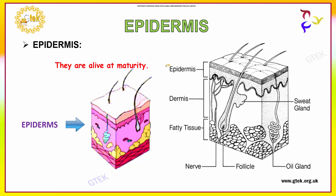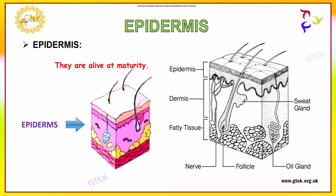Now we are going to discuss about epidermis. Epidermis — they are alive at maturity. The upper portion is called epidermis, and this portion is called dermis. The below portion is called fatty tissue, and this is called nerve. This portion is called follicle, which is the oil gland. This is called the sweat gland. The epidermis is represented here clearly.